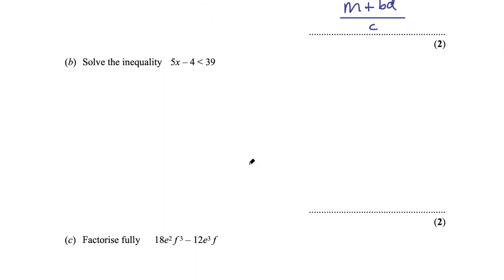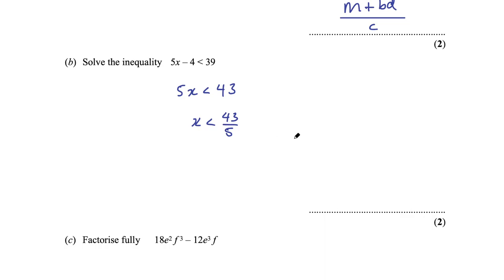Part B says solve the inequality 5x − 4 < 39. Add 4 to both sides: 5x < 43. Divide by 5: x < 43/5. Be careful with inequalities — if you multiply or divide by a negative number the inequality flips, but here there are no negatives. Final answer: x < 43/5.